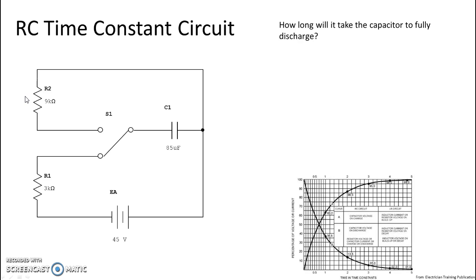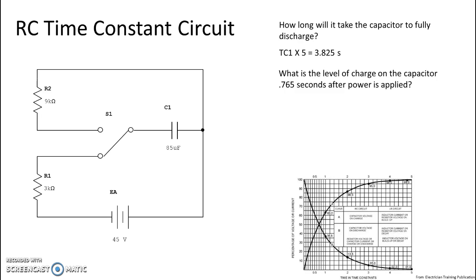Now that we know this is our discharge side, when we are looking to figure out time constant one we will be using those components. Time constant one would be 9k multiplied by 85 micro, then we multiply by 5, and we get a time of 3.825 seconds.